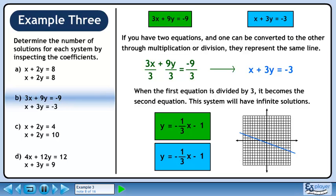We can verify this by converting each equation to slope-intercept form and graphing. We get y equals minus 1 over 3x minus 1 for each line, and the graphs lie right on top of each other.